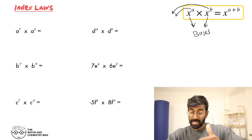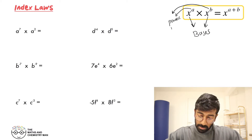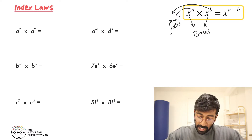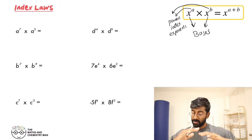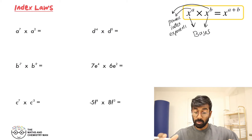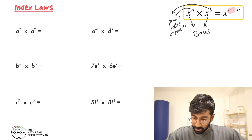...in this case the A and the B, these are called your powers, or you'll see them called indexes, indices, or exponents. A few different things they can be called. But no matter what they're called, what you do when you're multiplying is you add them together, providing your bases are the same.